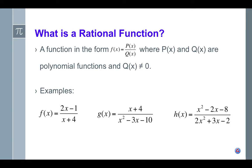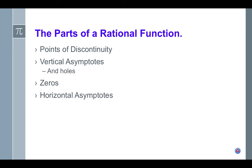Here are some quick examples. We'll be looking at those three functions later on in this video as well. So the parts that we're going to be looking at today are points of discontinuity, vertical asymptotes, and holes. We haven't discussed holes yet in class, but we are going to look at what's called a hole on a function. We're also going to be looking at zeros and horizontal asymptotes.